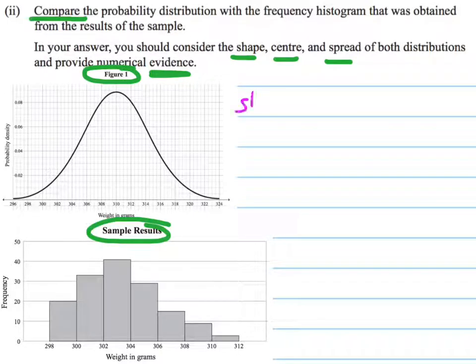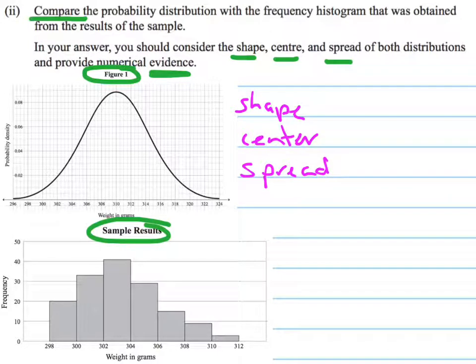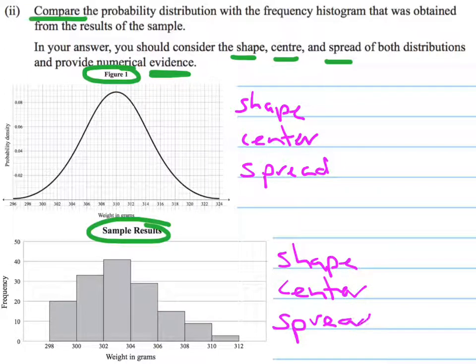So I'm going to start by looking at the shape and the centre and the spread of both of these graphs. So that's my first step, is to make the decision what is the shape, what is the centre and what is the spread of both of these.